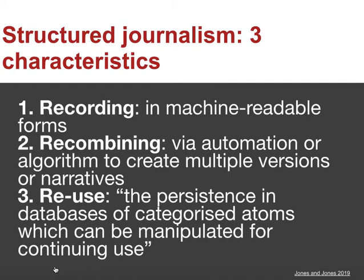Jones and Jones identify three characteristics of structured journalism: first, the recording of data — converting unstructured data into structured information that can be read by machines; second, the recombining of that information, for example combining multiple versions of a story or some sort of combined information page; and third, the reuse of that information — using it in the future, not just in the present.